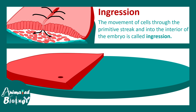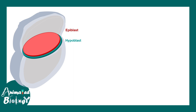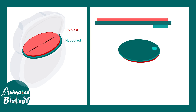Looking at the cross-section of the embryo, we can appreciate this movement. The arrows show how cells move first inward, then downward, and then again inward. This movement — ingression — is key to understanding the formation of the germ layers. We are looking at the epiblast and hypoblast from a top view, and cutting a cross-section along this angle gives us this view. Importantly, there is a precordial plate which defines the cranial end of the embryo.